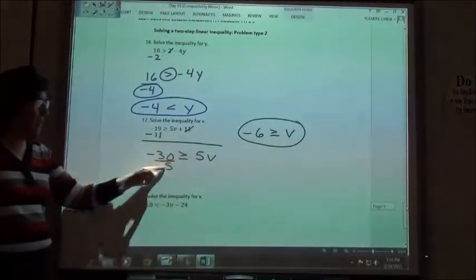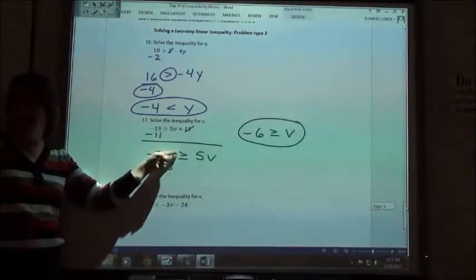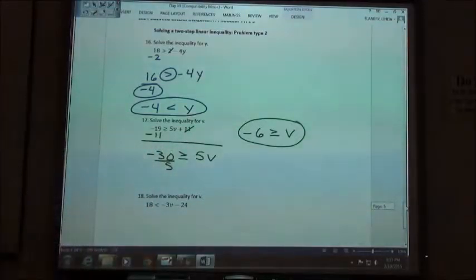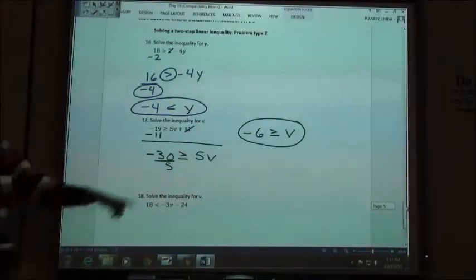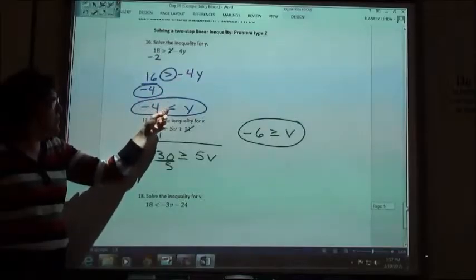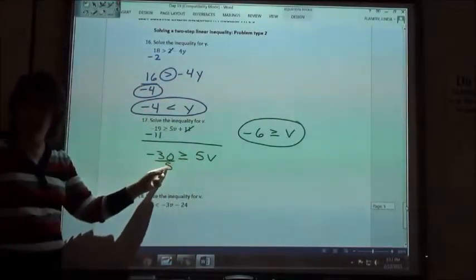I divided by a positive 5, so my sign stayed the same direction. I didn't have to flip it. Right? So, if my coefficient is negative, I flip my sign. But if it's positive, I leave it the same direction.